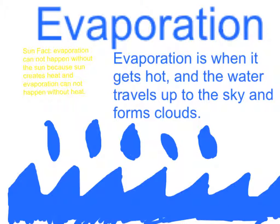Evaporation is when it gets hot and the water travels up to the sky and forms clouds. Sun fact: evaporation cannot happen without the sun because the sun creates heat, and evaporation cannot happen without heat.